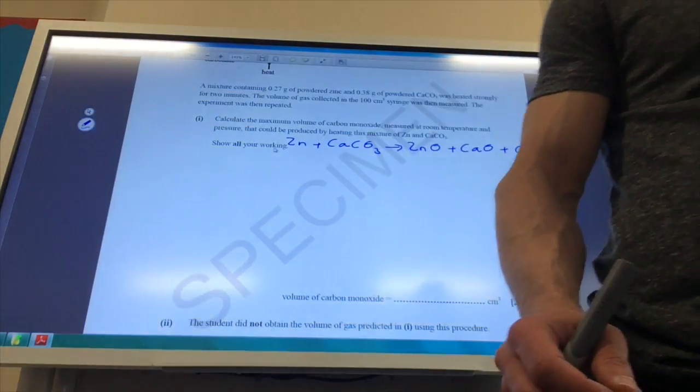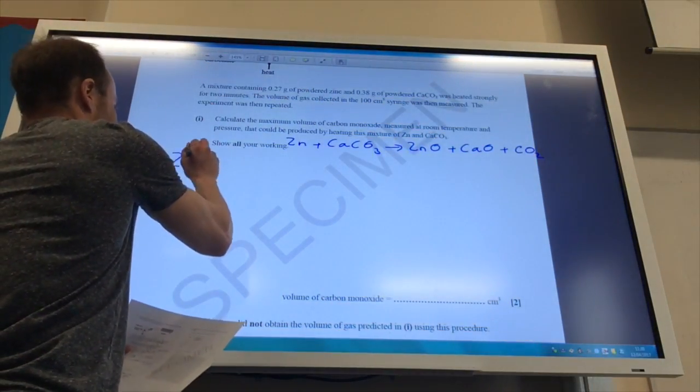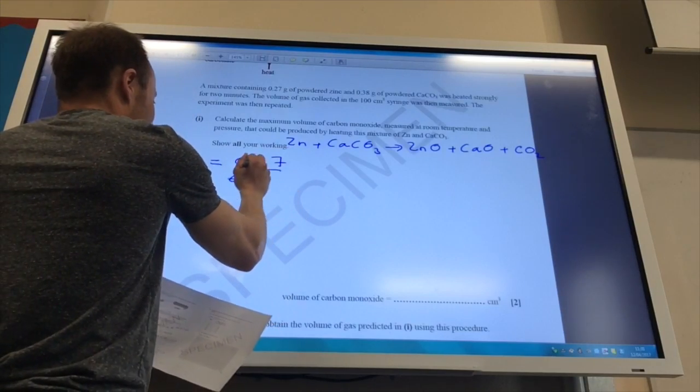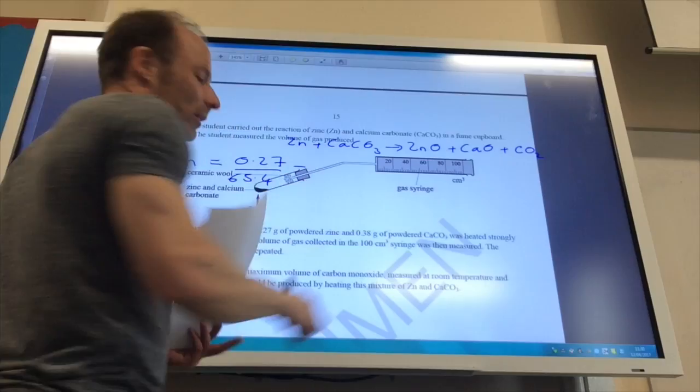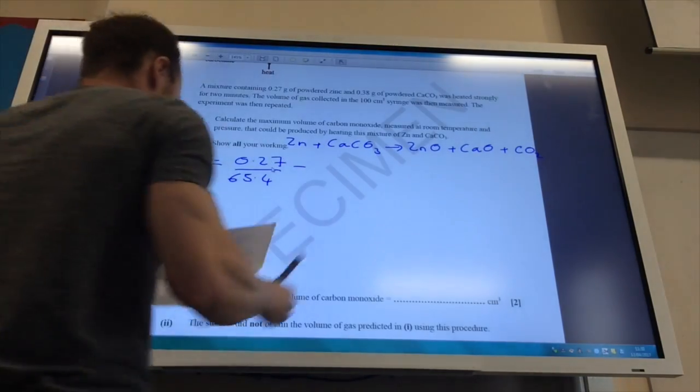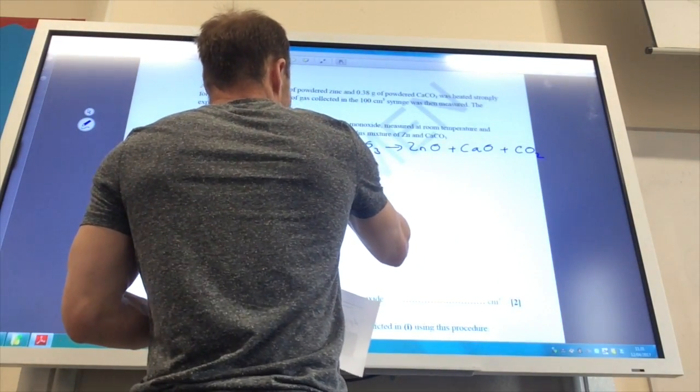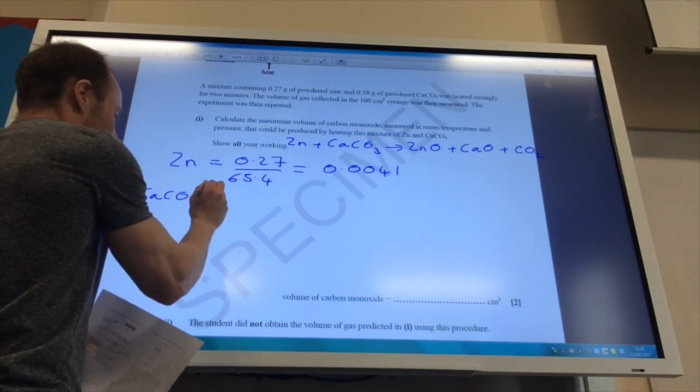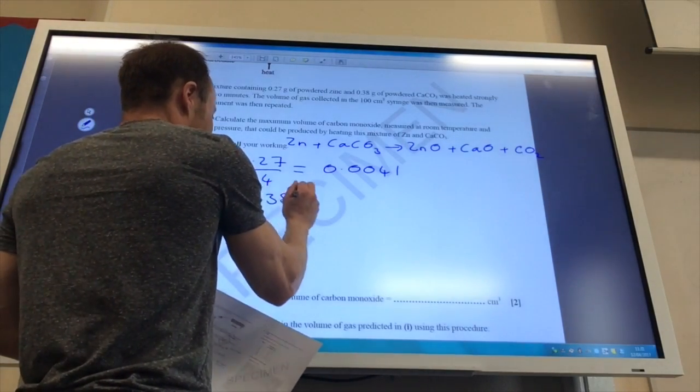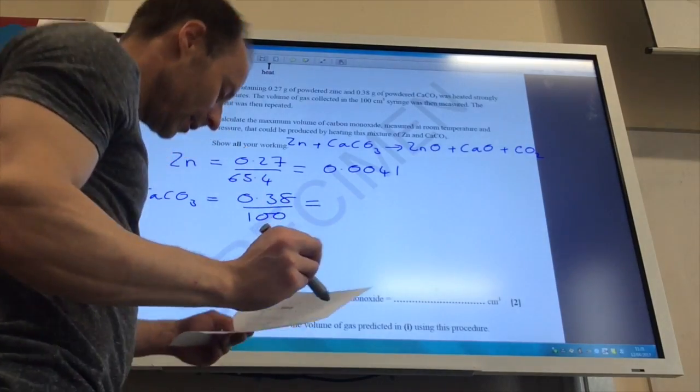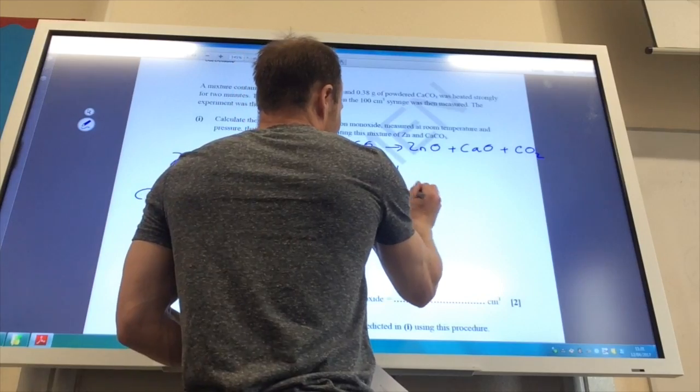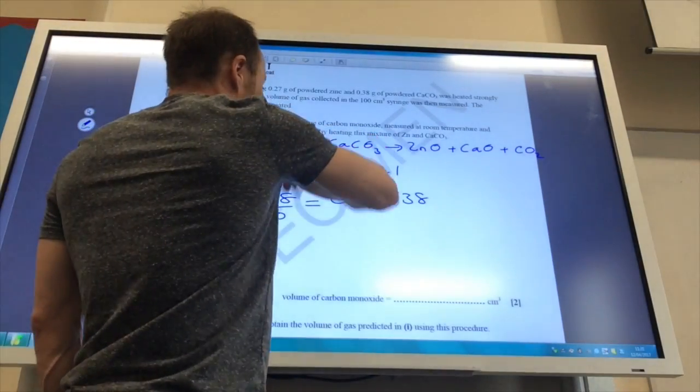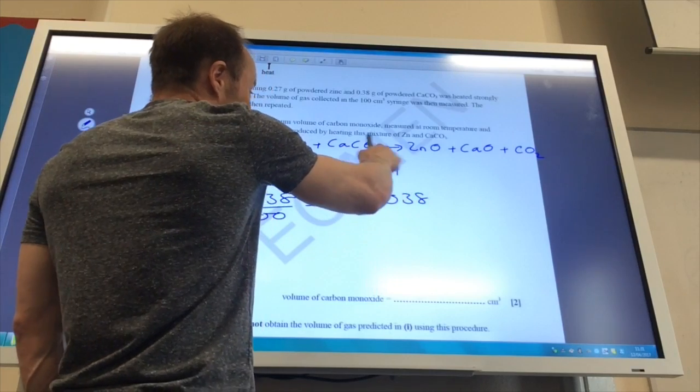So here we go. We are going to have moles of zinc first of all, is going to be the mass 0.27 divided by the relative atomic mass 65.4. That gives me 0.0041 moles. Let's do calcium carbonate. That is going to be 0.38 divided by the molar mass of calcium carbonate is a nice 100. So that gives me 0.0038. So the zinc is in excess. Yep, got too much of it. It's a one-to-one reaction, nice and easy. I've got more of that than that. So some of that's going to be unreacted.